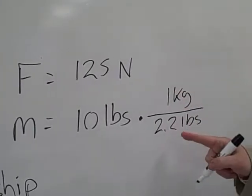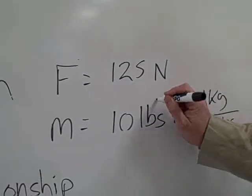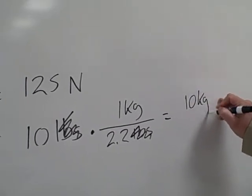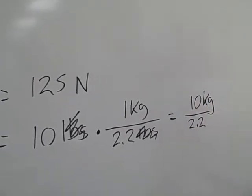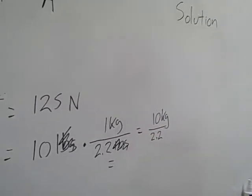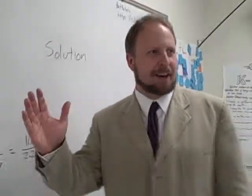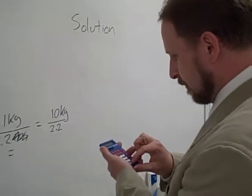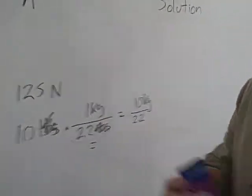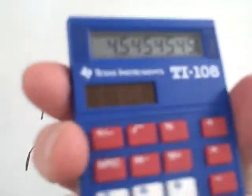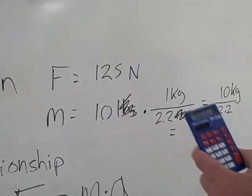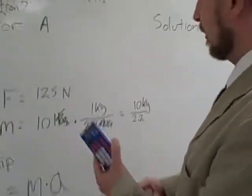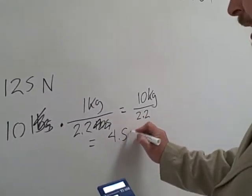I multiply by 1 kilogram over 2.2 pounds. My pounds now cancel out — they are gone. I get 10 kilograms divided by 2.2. Looks like a tricky bit of division — calculator! That's a lot of fours and fives. That's too many fours and fives, in fact. We're going to have to round that off, because in physics no number is ever exact, since they're all based on the real world. So I'm going to round that to 4.5 kilograms.